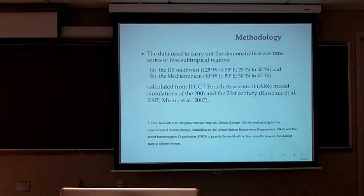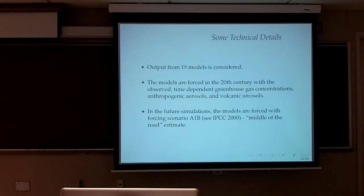We are taking data to carry out this experiment from two subtropical regions: the U.S. Southwest and the Mediterranean. These are calculated from the IPCC fourth assessment model simulations of the 20th and 21st century. This problem was actually studied - the drought or the change in climate was studied in a paper by Seager et al. in 2007 which appeared in the Journal of Science. Some of this data is out there in the science. One of the authors is Michael, so that's how we got all of this data.